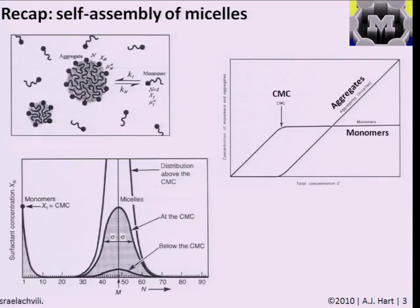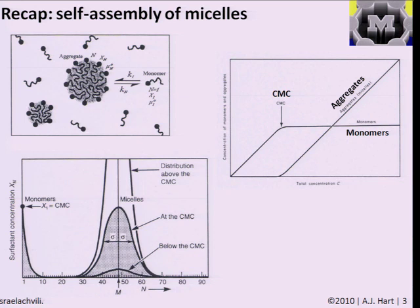We started last lecture by talking about self-assembly in solution — our first approach, considering the basic thermodynamics of molecules aggregating into clusters. This was kept at a general level, but we wanted to convey that the energetics of aggregation and interaction between components determine the distribution of structures that will assemble. You can drive assembly by changing the concentration of monomers or precursor in solution.